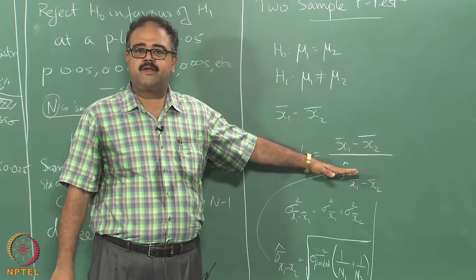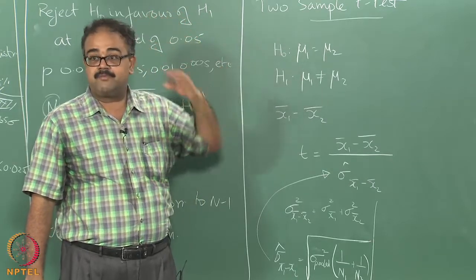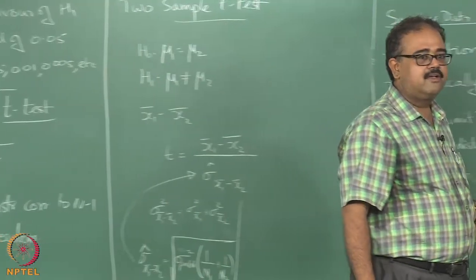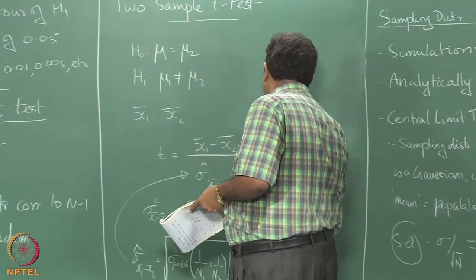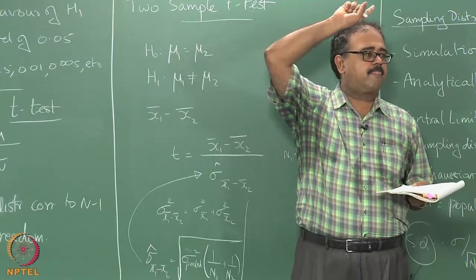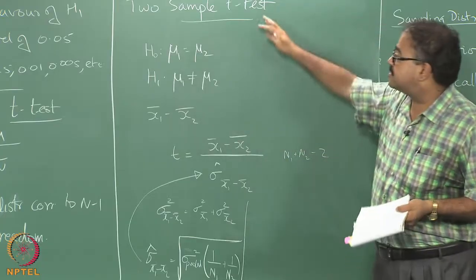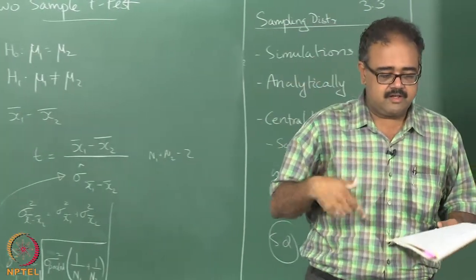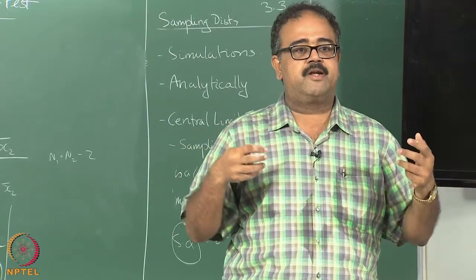Now how many degrees of freedom will I have? We talked about this last time also: n1 plus n2 minus 2, since it is (n1 minus 1) plus (n2 minus 1). You take this t-statistic, look up that table, and figure out whatever p-level you want. That is basically it — this is called the two-sample t-test and it is very useful when you want to compare the performance of two different algorithms on some sample that has been drawn.